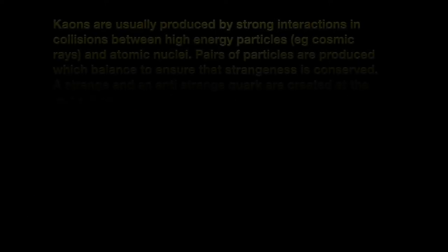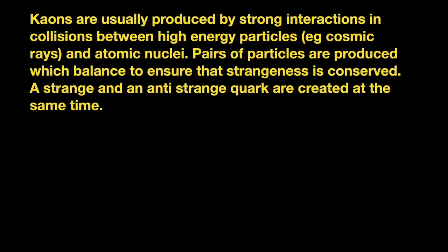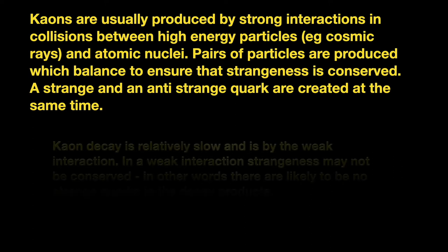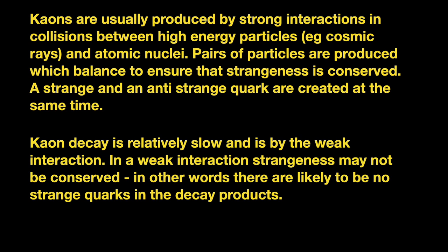K-ons are produced in strong interactions, or with the strong force, in collisions between high energy particles. These collisions don't result in the production of one strange particle, but always two. In this production, strangeness is conserved. The decay is via the weak force or weak interaction. And although this happens in a minute fraction of time, it is relatively slow compared to other similar interactions. In this weak force decay, strangeness is generally not conserved.